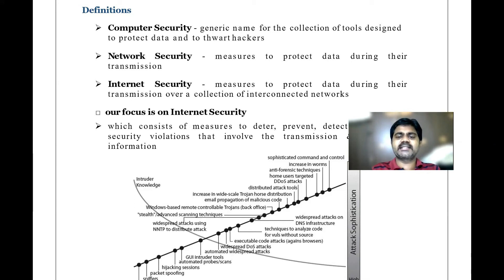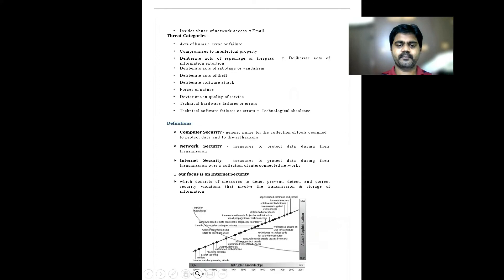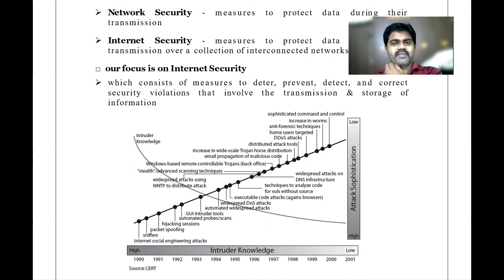Our main focus is on internet security because every time we rely on the internet. Internet security consists of measures to deter, prevent, detect, and correct security violations involving the transmission and storage of information. Looking at the diagram of intruder knowledge from low to high: an intruder is a person who is not authentic — for example, only 10 authenticated employees can access a company website; an 11th outsider is an intruder.